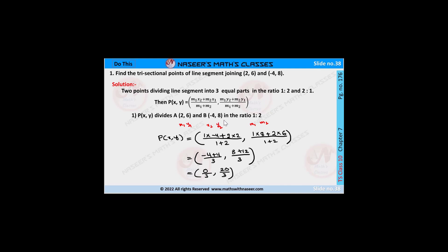We substitute these values: X = (1×(-4) + 2×2) / (1+2) and Y = (1×8 + 2×6) / (1+2). So 1×(-4) = -4, 2×2 = 4, 1×8 = 8, 2×6 = 12. Then -4 + 4 = 0 and 8 + 12 = 20.